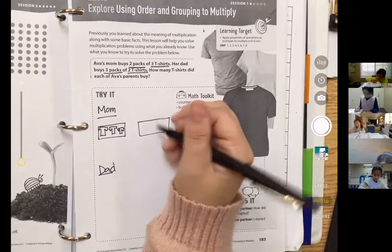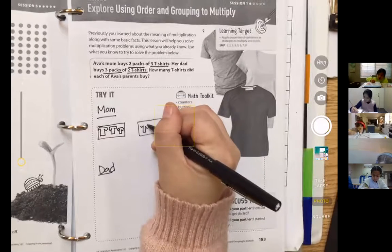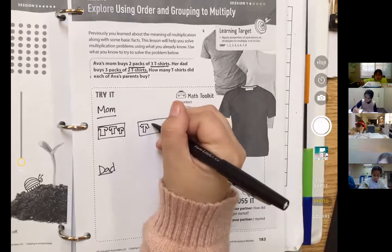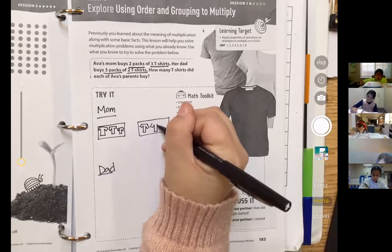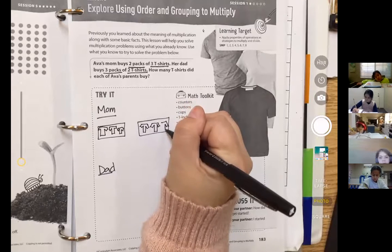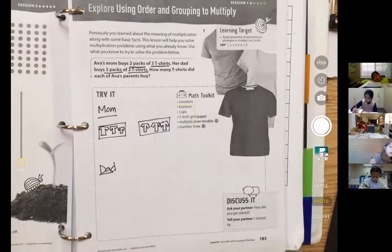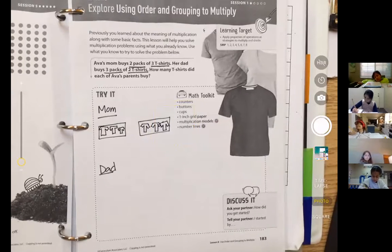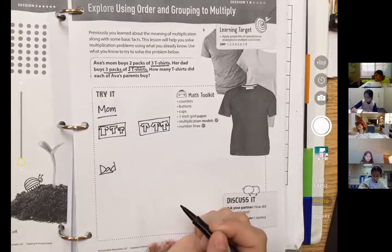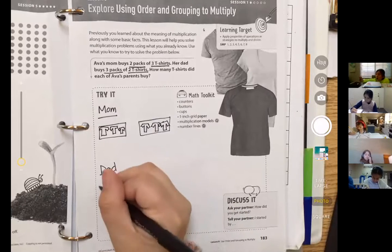And if you don't even want to draw t-shirts, you want to represent it a different way, that's also okay. But somehow you are showing two packs of three, and then her dad is three packs of two.